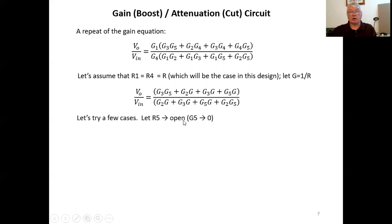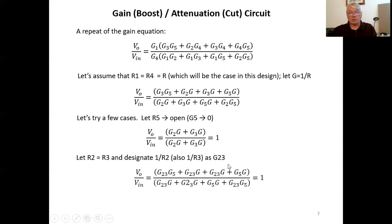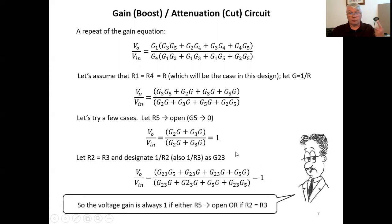Now let's try a few cases. Let's let r five go to open. If r five is an open circuit, its conductance is zero. And then the gain v out to v in becomes simply one, regardless of the values of r two and r three. Well, let's let r two equal r three. And we'll designate one over r two, which is also one over r three in this case as g two three. And under those circumstances, v out to v in is one independent of the value of r five. So the voltage gain is always one if either r five is open, or if r two equals r three.